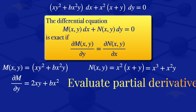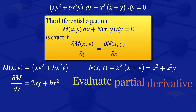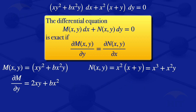I now go on and evaluate the partial derivative of N with respect to x. For this partial derivative, we treat y as if it's a constant. Differentiating x³ + x²y with respect to x gives us ∂N/∂x = 3x² + 2xy.